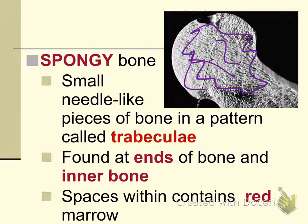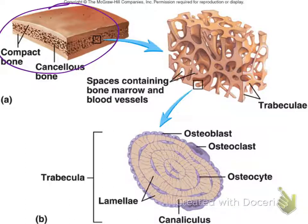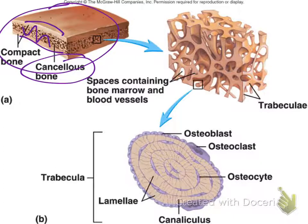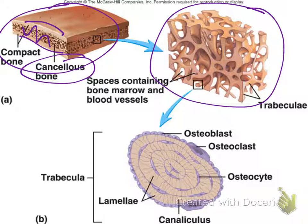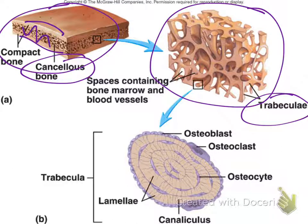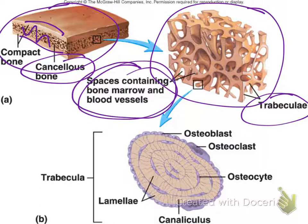The spaces within spongy bone are filled with red marrow, which is basically red blood cells — that's where red blood cells are formed. Inside the bone, cancellous bone (another name for spongy bone) contains the trabeculae — the intricate framework of bone with spaces inside. Those spaces are filled with red bone marrow and blood vessels. One of the functions of bone is hematopoiesis, which means making red blood cells.